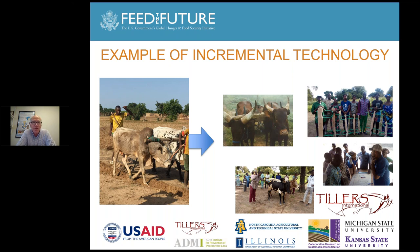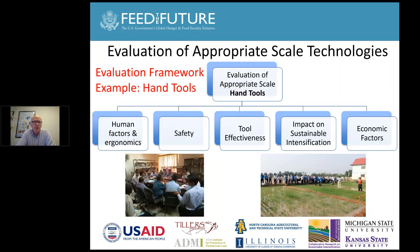Beyond redesigning the yoke, training oxen earlier makes them much more maneuverable in the field to increase productivity — measures that can really improve the effectiveness of the animals and equipment. Now I want to turn to the evaluation process. How do we actually evaluate these technologies? As an example, I'm going to focus on hand tools, but this could be applied to any technologies that may be considered and introduced into a country.